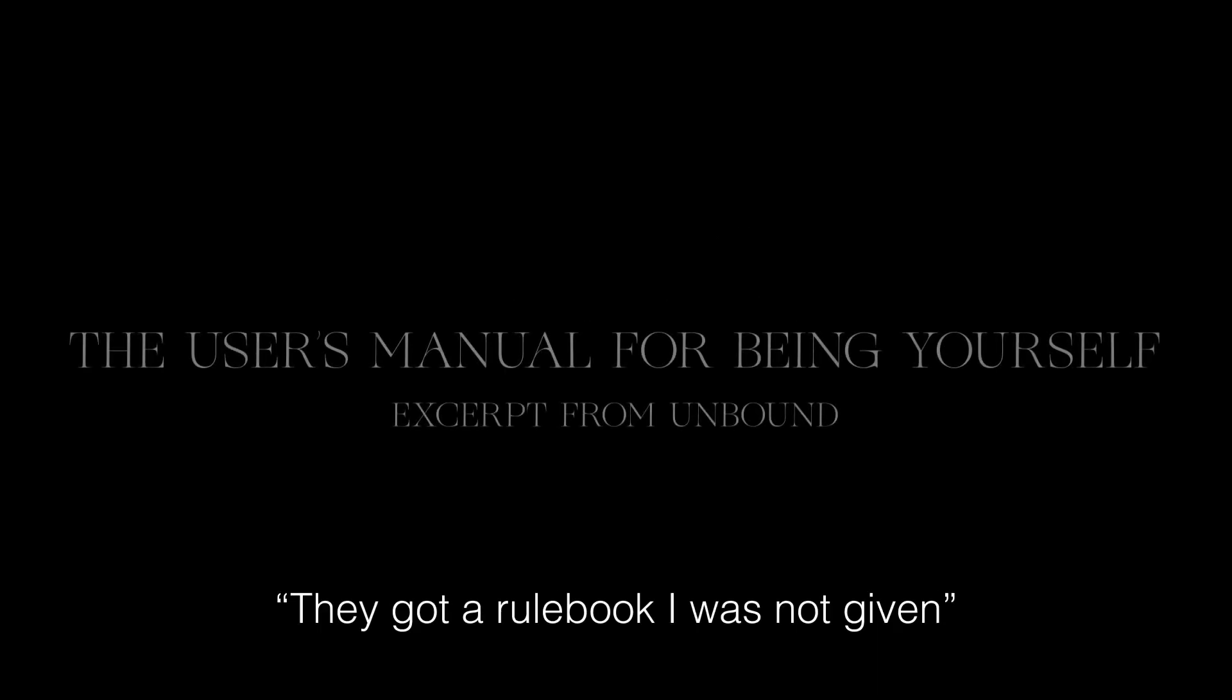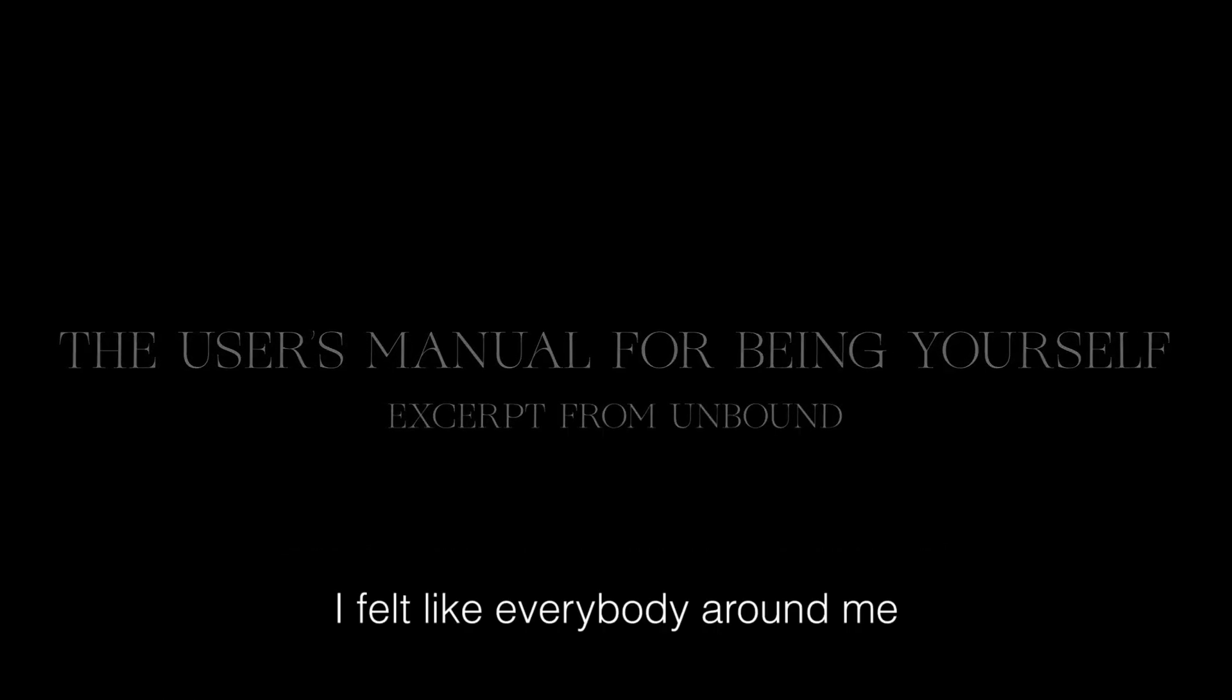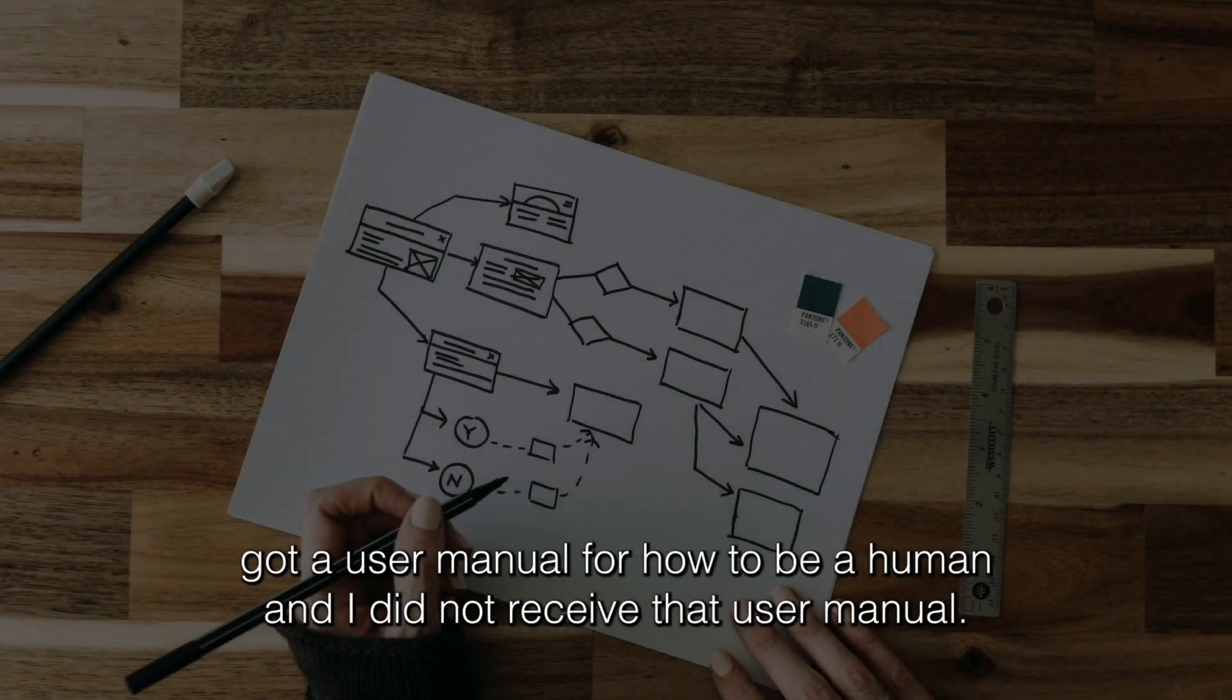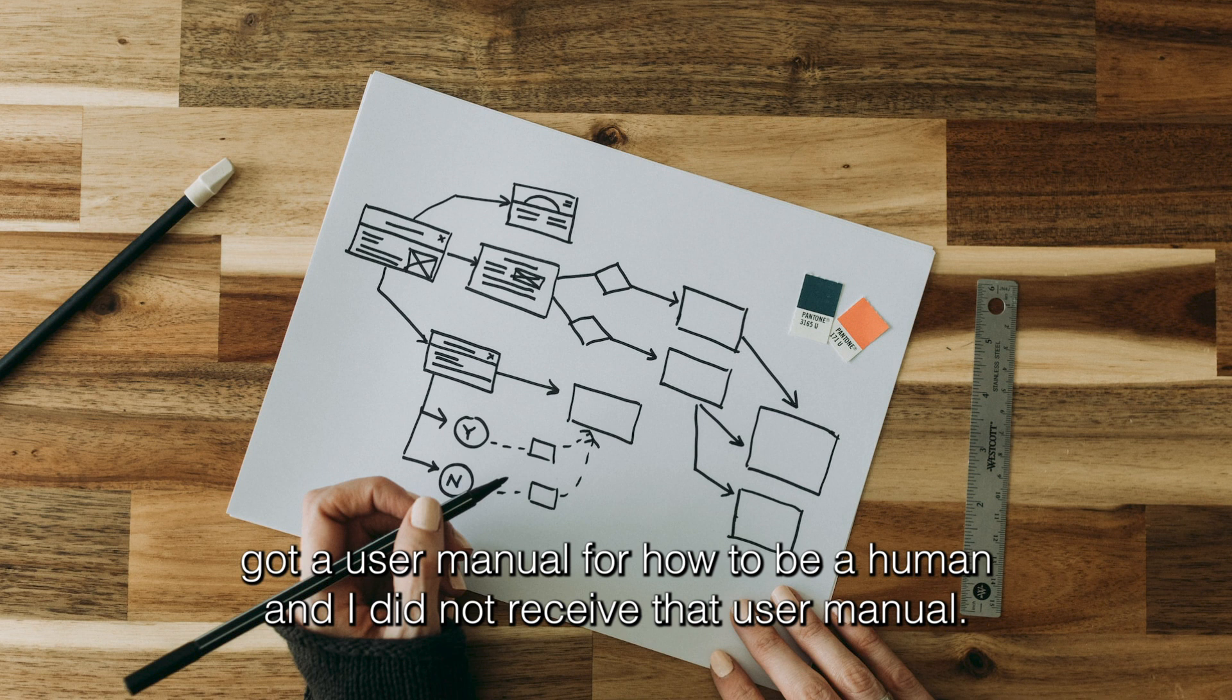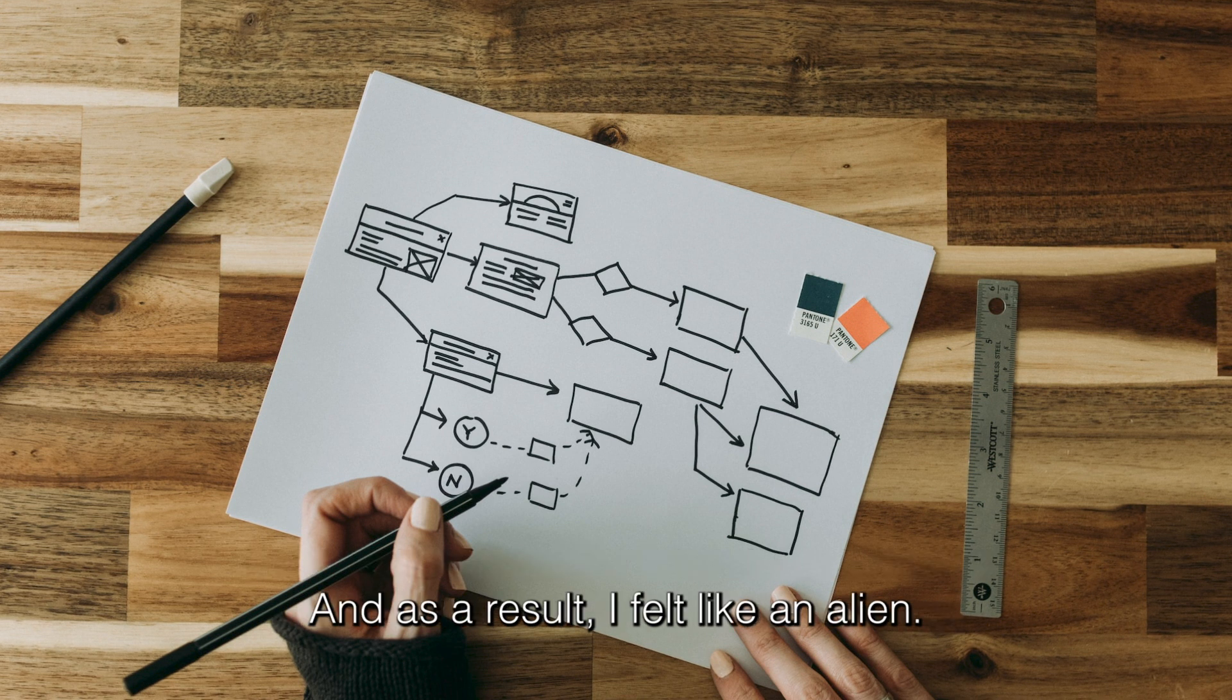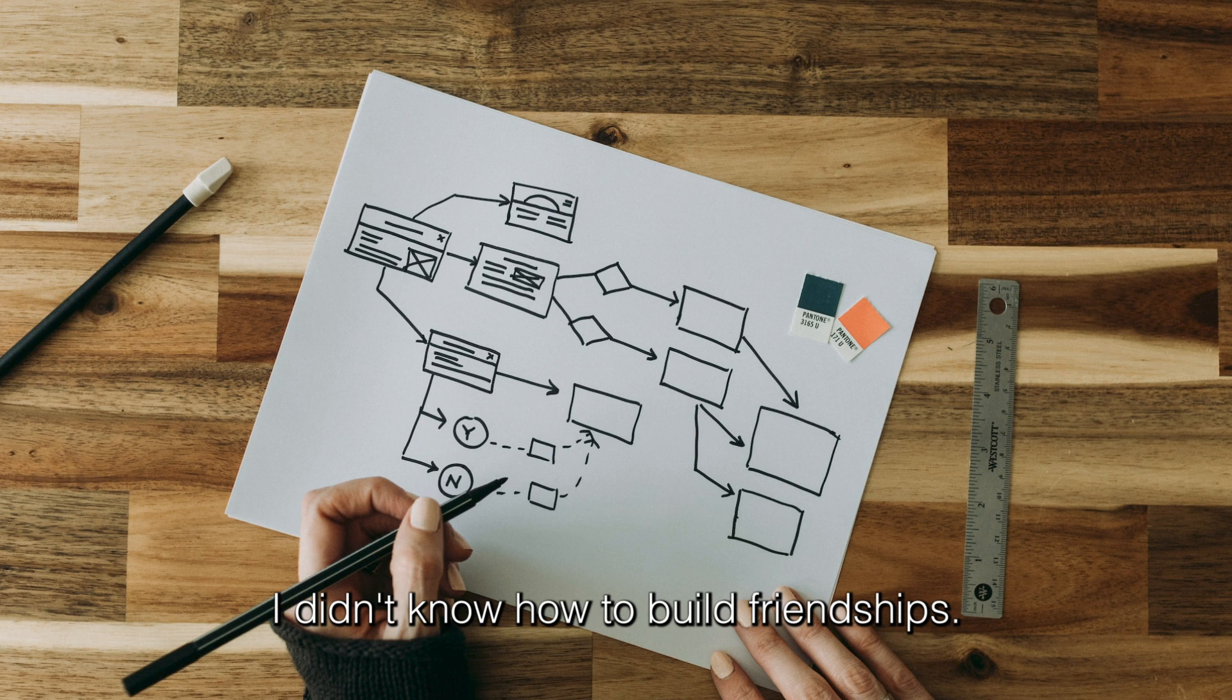It's really easy to look around and be like they got a rulebook I was not given, they got an instruction manual and how do I get mine. I felt like everybody around me got a user manual for how to be a human and I did not receive that user manual. And as a result I felt like an alien. I didn't know how to have intimacy, I didn't know how to build friendships.